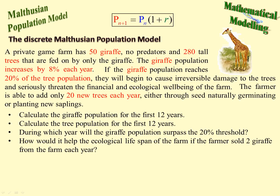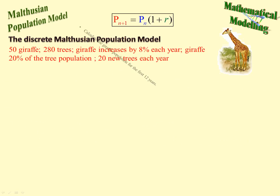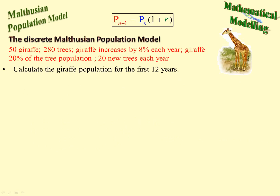How would it help the ecological lifespan of the farm if the farmer sold 2 giraffes from the farm each year? That will obviously increase the number of years, because there wouldn't be as much strain on the trees. This could ultimately be used to work out how many giraffes should be sold each year to keep up with the trees. So let's calculate the giraffe population for the first 12 years. All we're doing is multiplying by 1.08, and we ignore fractions.